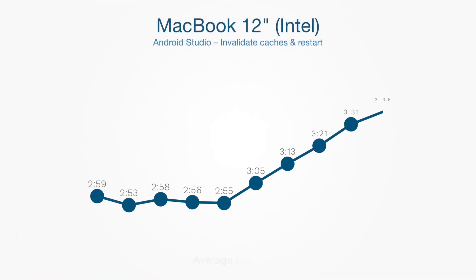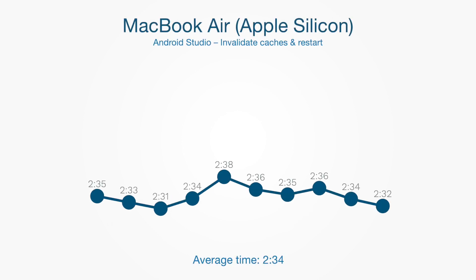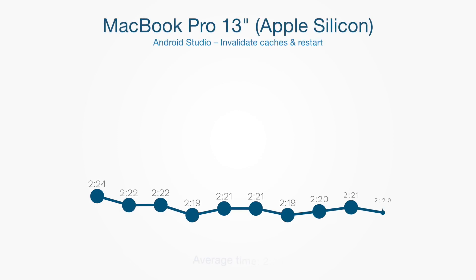I repeated this 10 times to check for throttling. The MacBook 12 managed it in around 3 minutes for the first 5 runs, but then throttling kicked in and the time increased by almost 40 seconds. MacBook Pro 15 kept doing it in about 1 minute 12 seconds, but had to spin up fans twice. MacBook Air kept it around 2 minutes 35 seconds with no throttling — remarkable for a fanless machine. MacBook Pro 13 did it in 2 minutes 20 seconds, kept it consistent, and never turned on a fan at all.